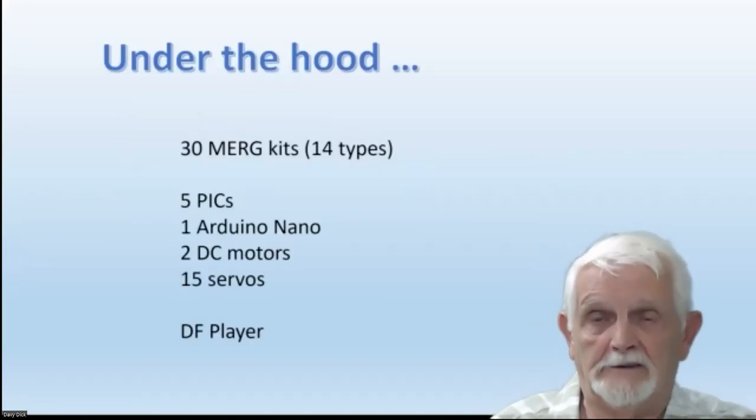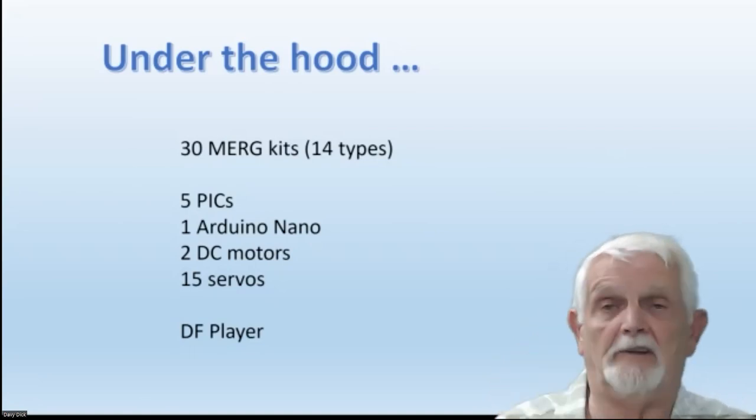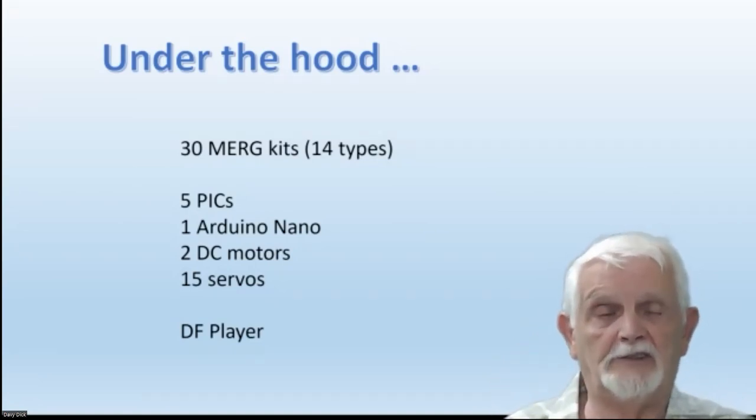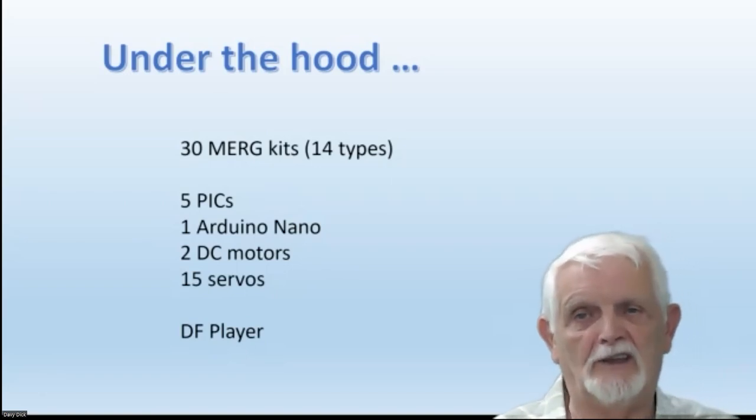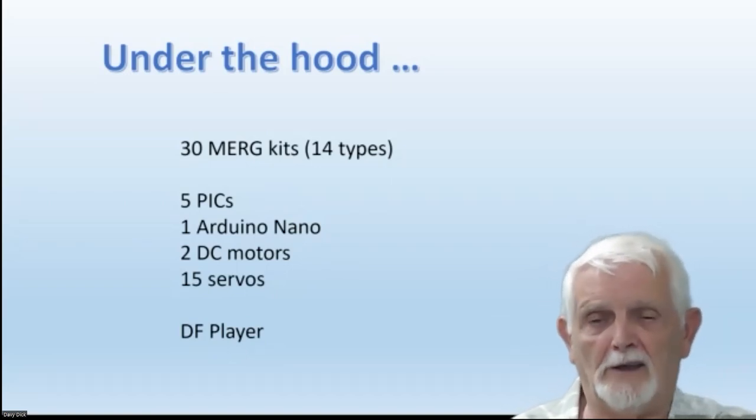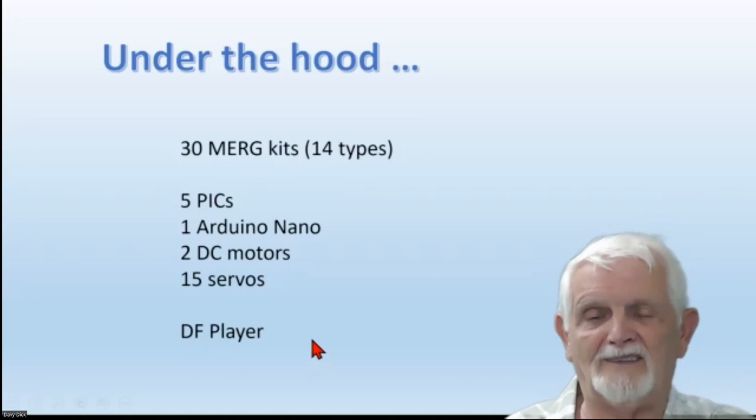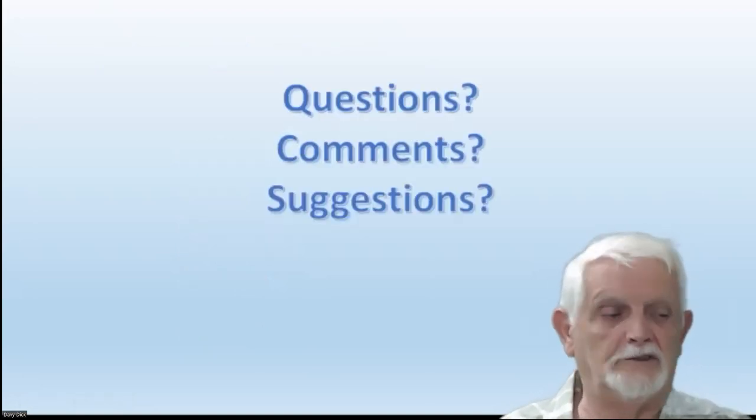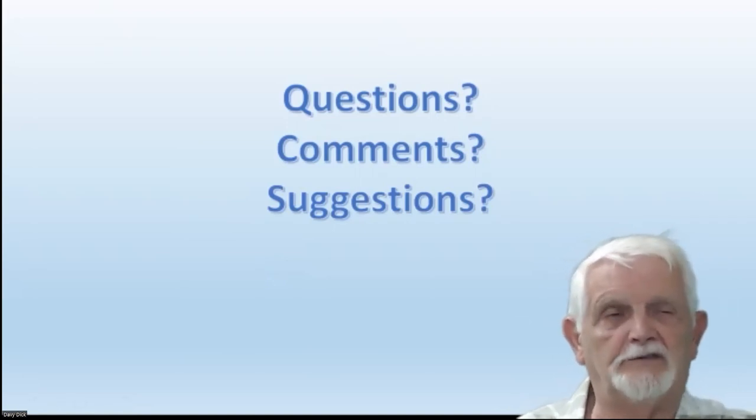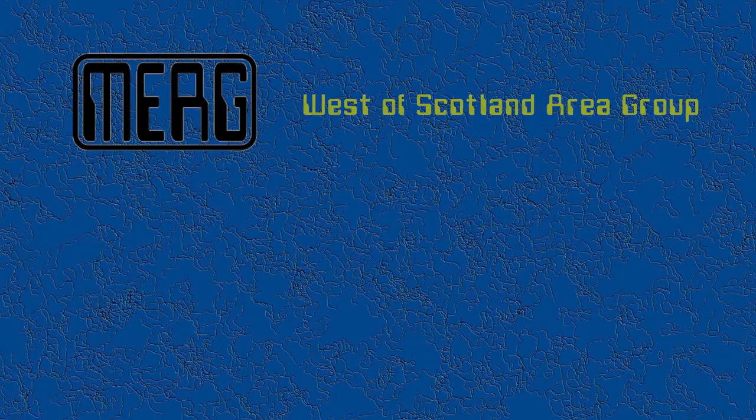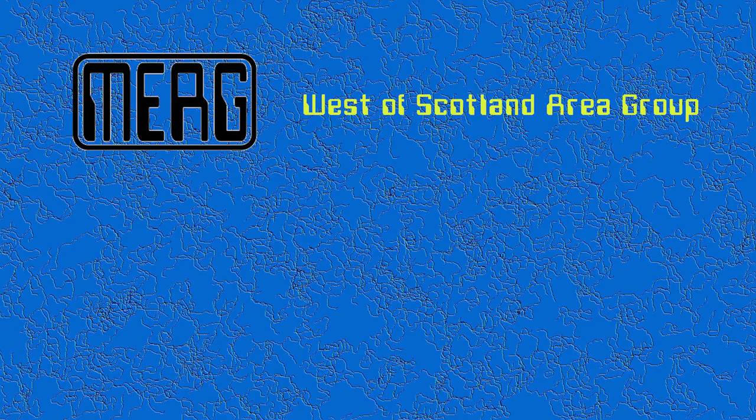So, finally, gents, to make this whole thing work, we've got 30 different MERG kits under that hood. 14 different types of MERG kits, we've got five PICs, we've got one Arduino, we've got two DC motors, 15 servos, DF player, cuddly toy, holiday for two in Miami, and so on. We've packed a lot in, we call it a quart in a pint pot. So that's how it works. I hope you've enjoyed it. Are there any questions, comments, or suggestions for future changes? Thank you.